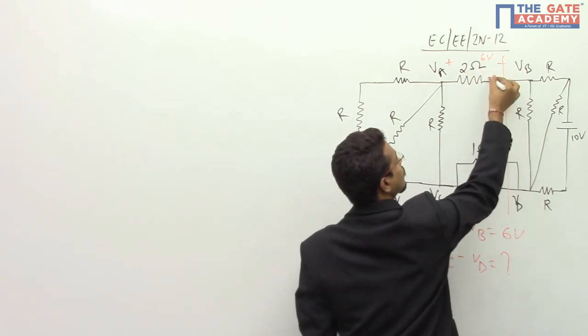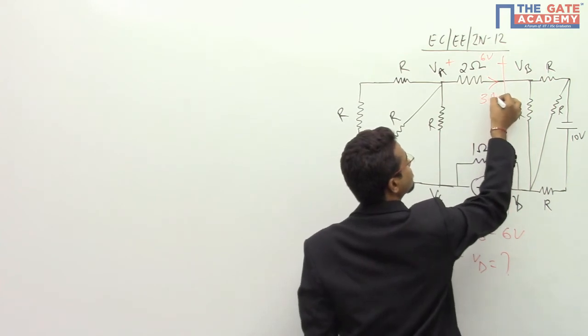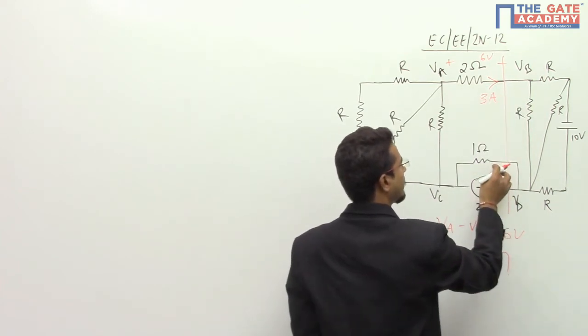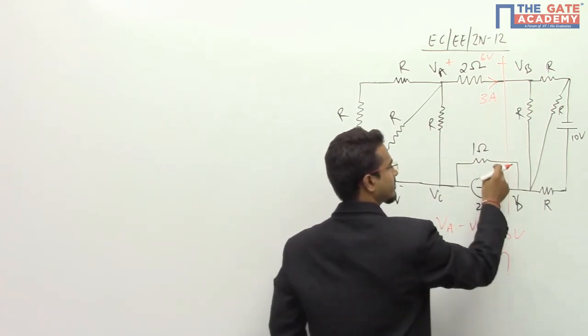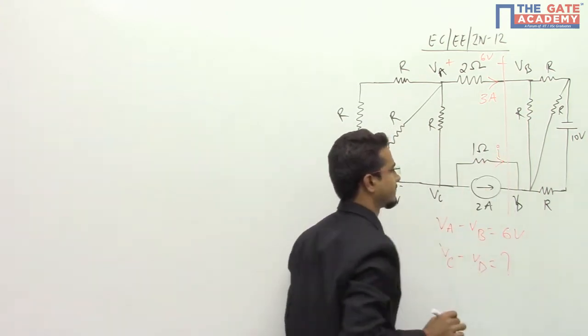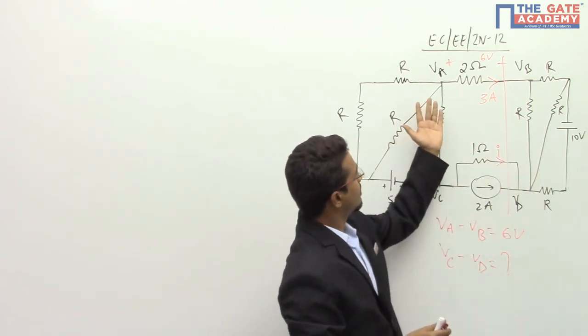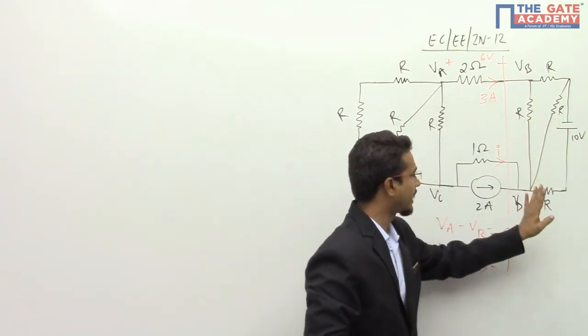2 ohm is current. Sorry, 2 ohm is the resistance. So current will be 6 by 2, 3 ampere. I don't know what is the value of this current I. So I will assume that the current is I in this side. So now the total current here to here is equal to total current here to here.